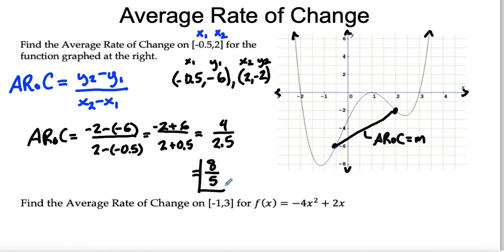The average rate of change in this is 8 over 5. And that makes sense, because if you look at the slope of this, it looks like about 8 fifths.